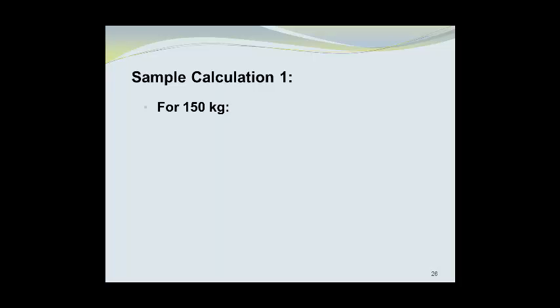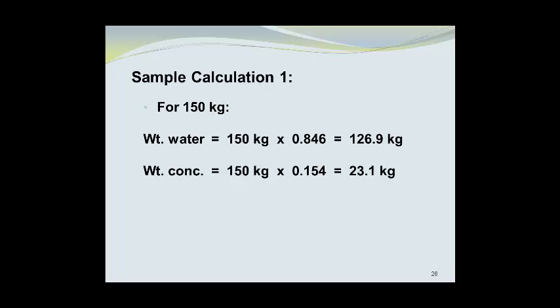We now want to make 150 kilograms of product, so the weight of water will be 150 kilograms times the percent water expressed as a decimal, which is 0.846, which gives us 126.9 kilograms of water. The weight of the concentrate will be 150 kilograms times the percentage of concentrate as a decimal fraction, which is 0.154, and that equals 23.1 kilograms of the concentrate.